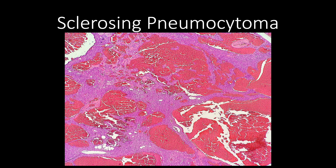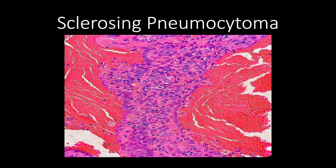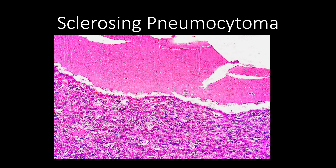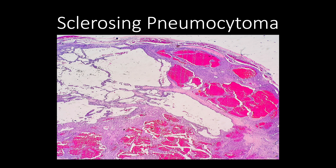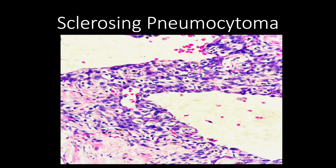This is another sclerosing pneumocytoma where the predominant architecture is hemorrhagic. Let's delve closer into the cells surrounding the hemorrhage. You can see your surface cuboidal cells resembling your type 2 pneumocytes, as well as your round stromal cells. Here's another image showing surface cuboidal cells and round stromal cells, and another case that is predominantly hemorrhagic as well.